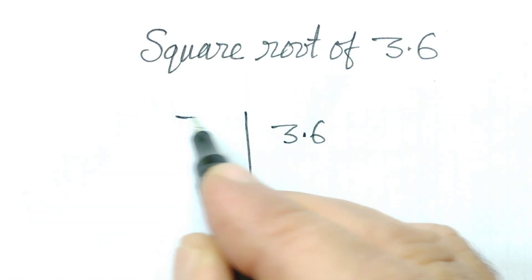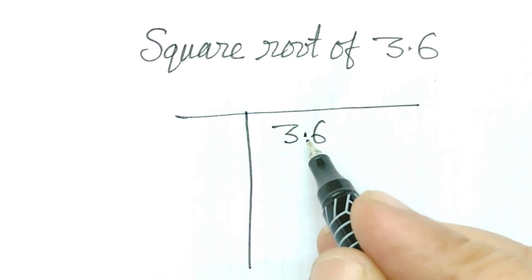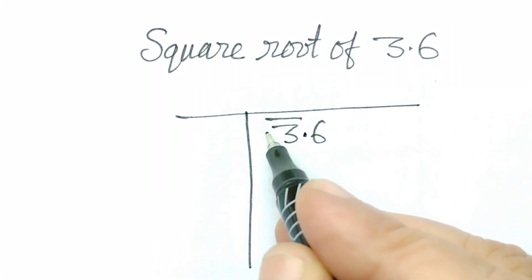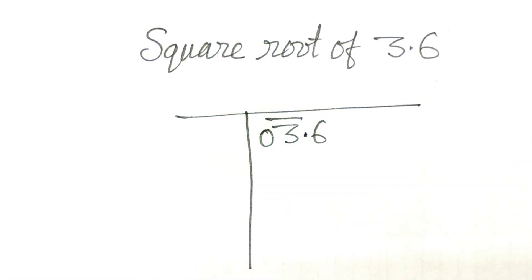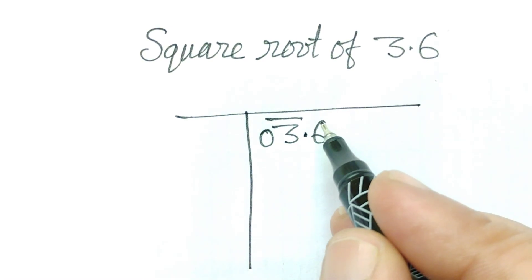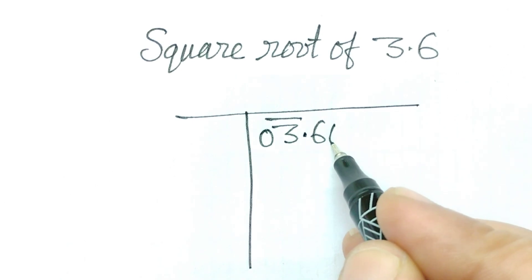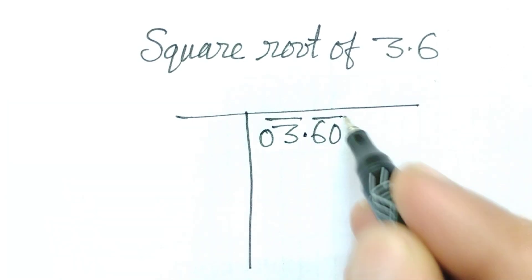3.6. From the decimal point, if we go left hand side, we will make a pair. So we can add 0 here. And same way, if we go to right hand side from the decimal point, we can make a pair adding 0. No problem.